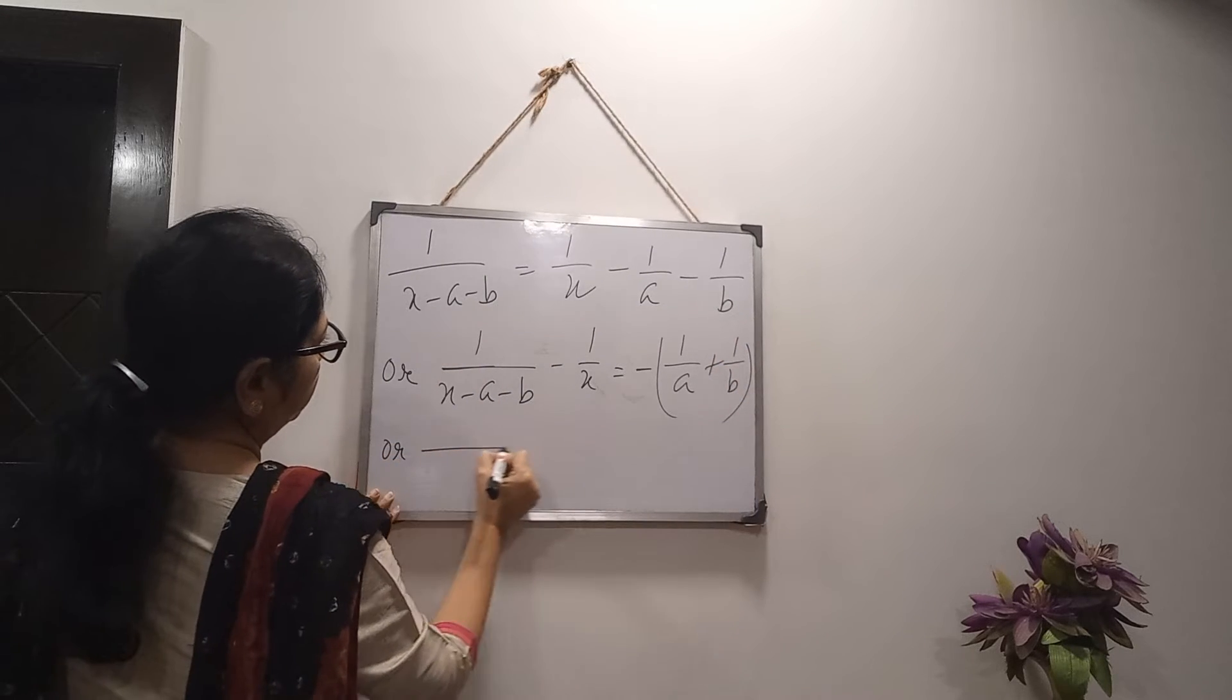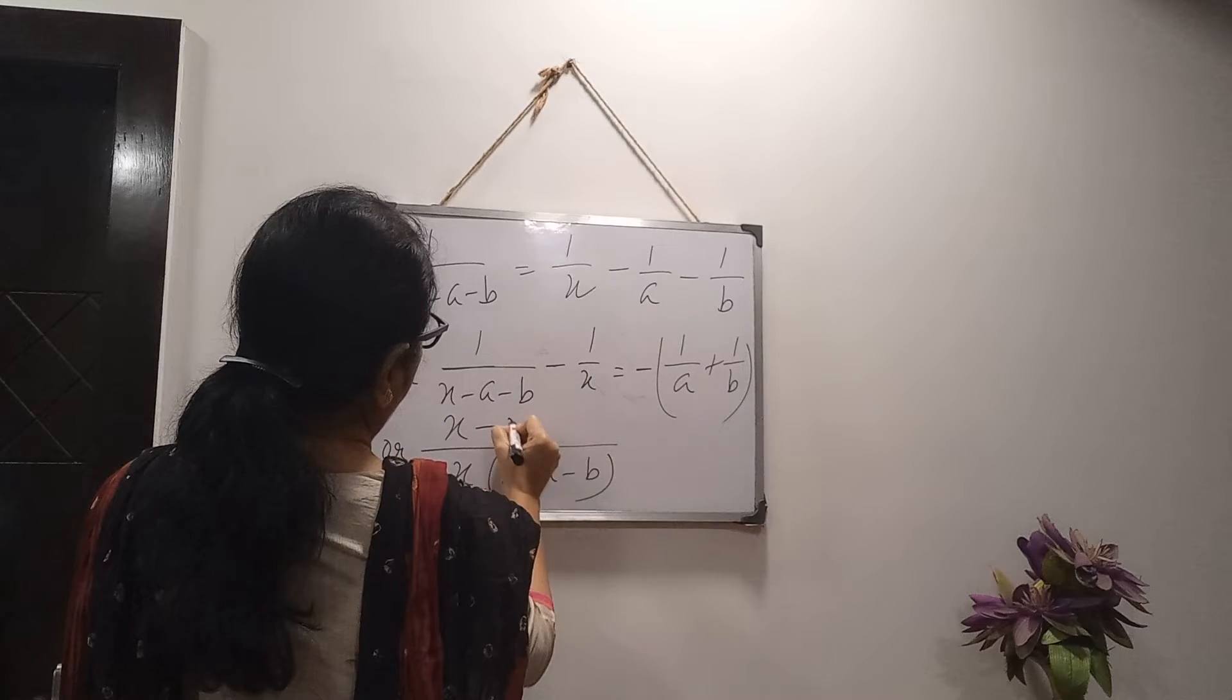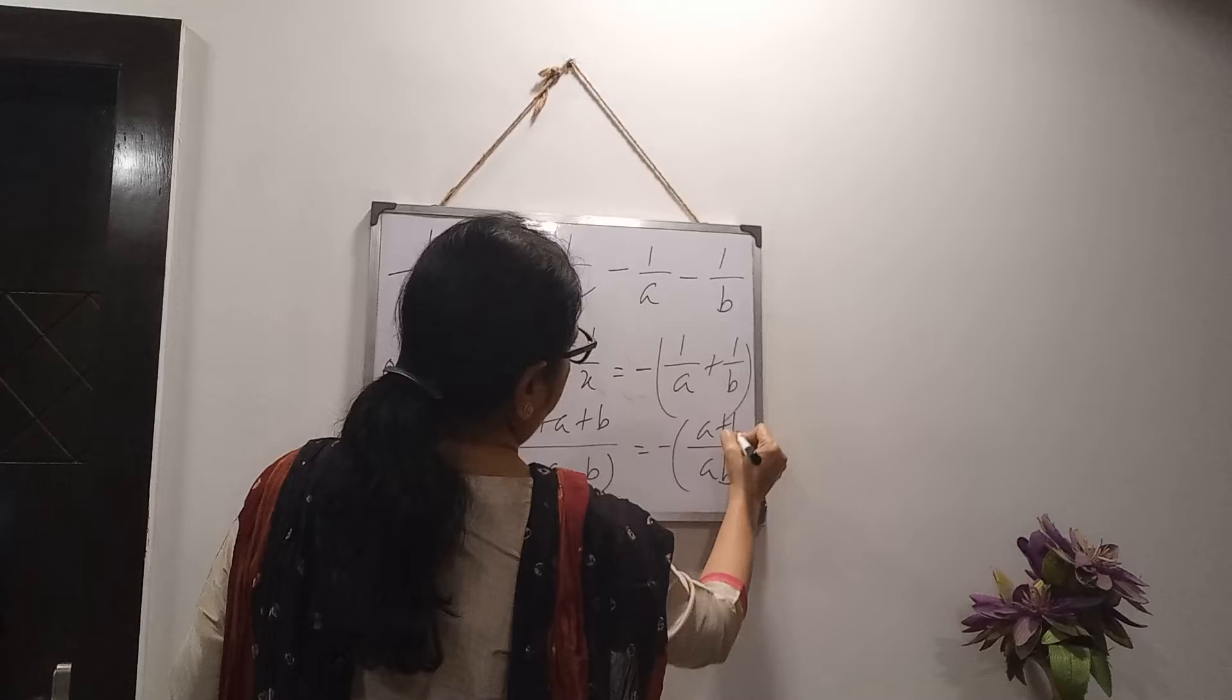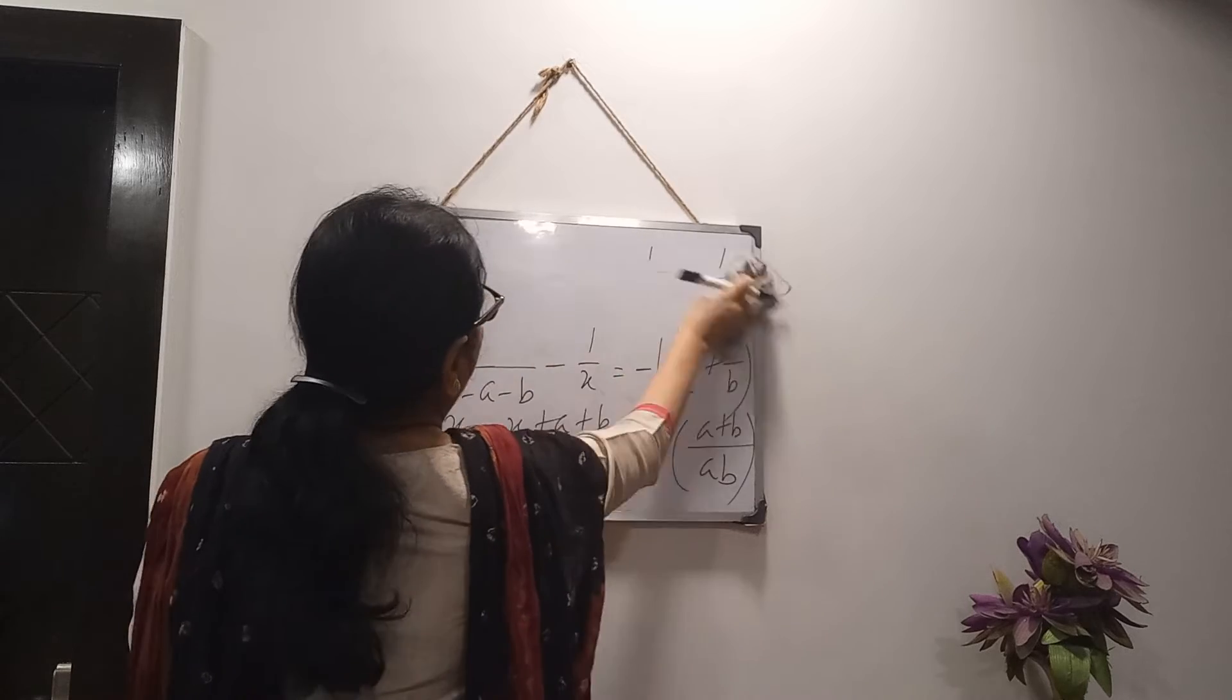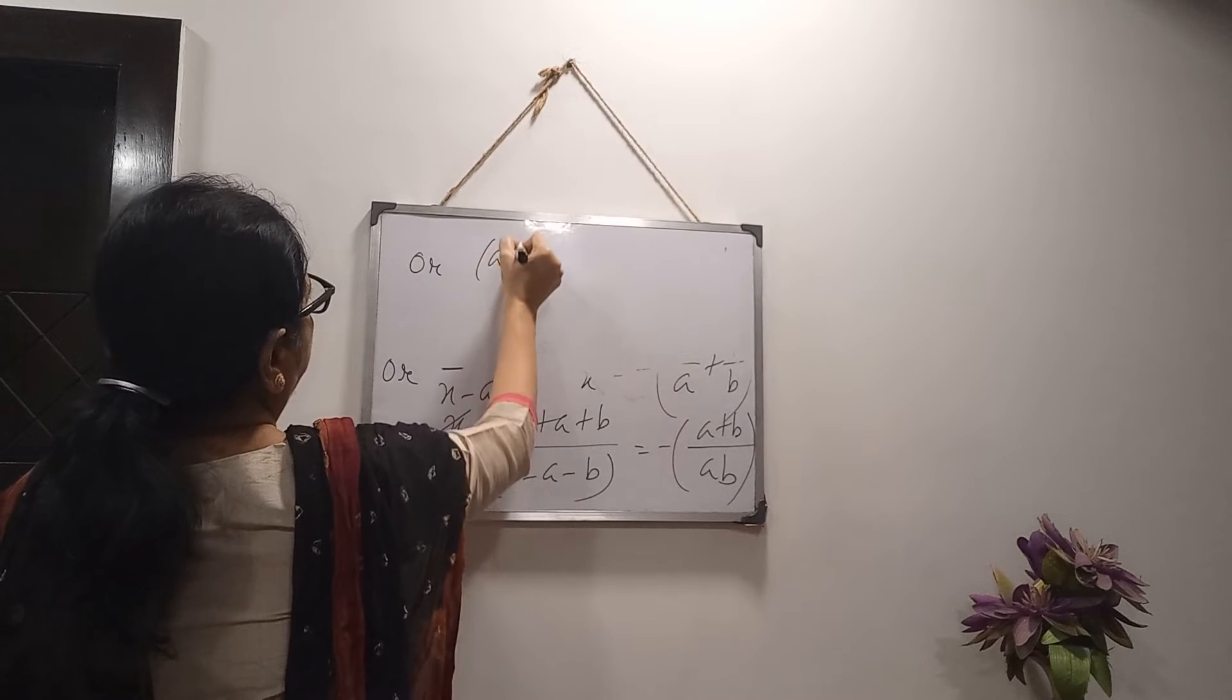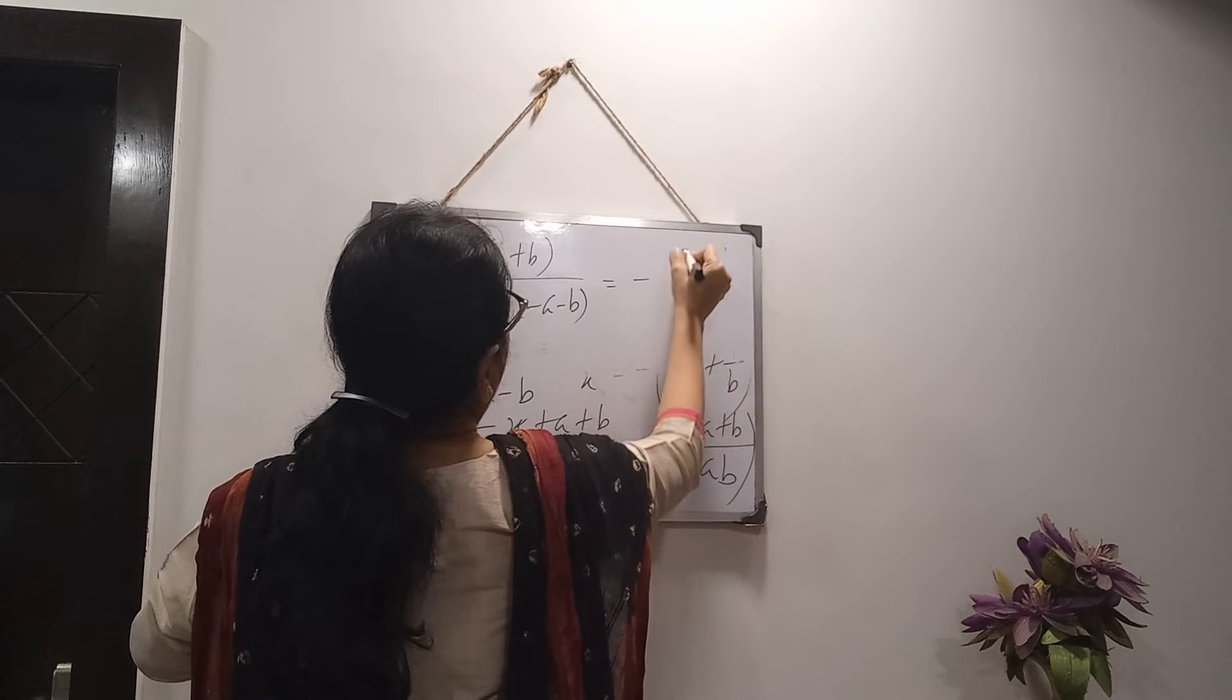Here, take the LCM. x into x minus a minus b. So, what will come? Then, there is minus. It will be minus x plus a plus b. And right side also, take the LCM. It is coming. A plus b.